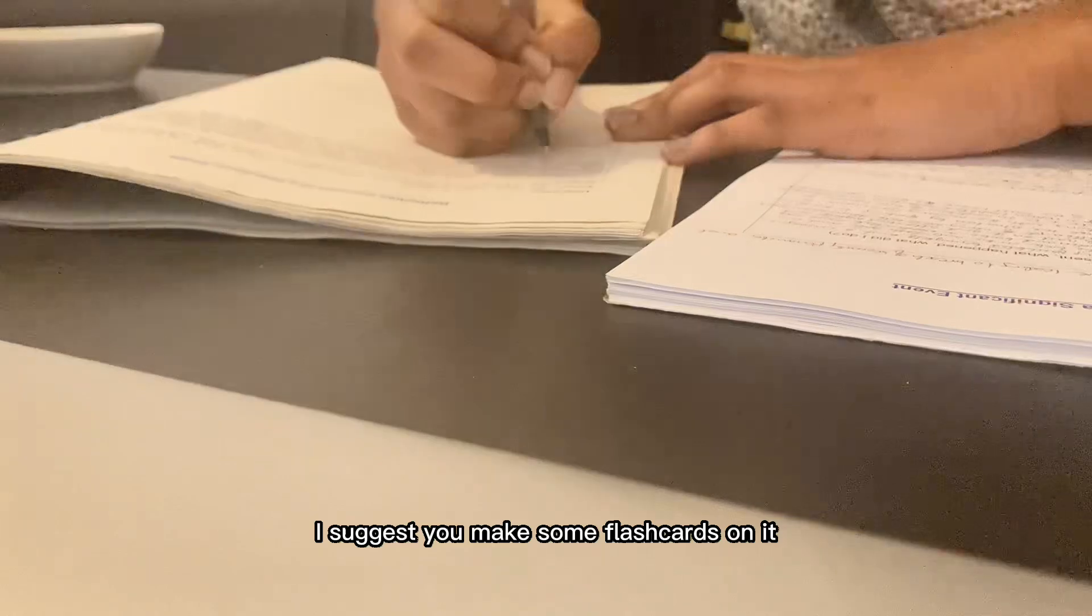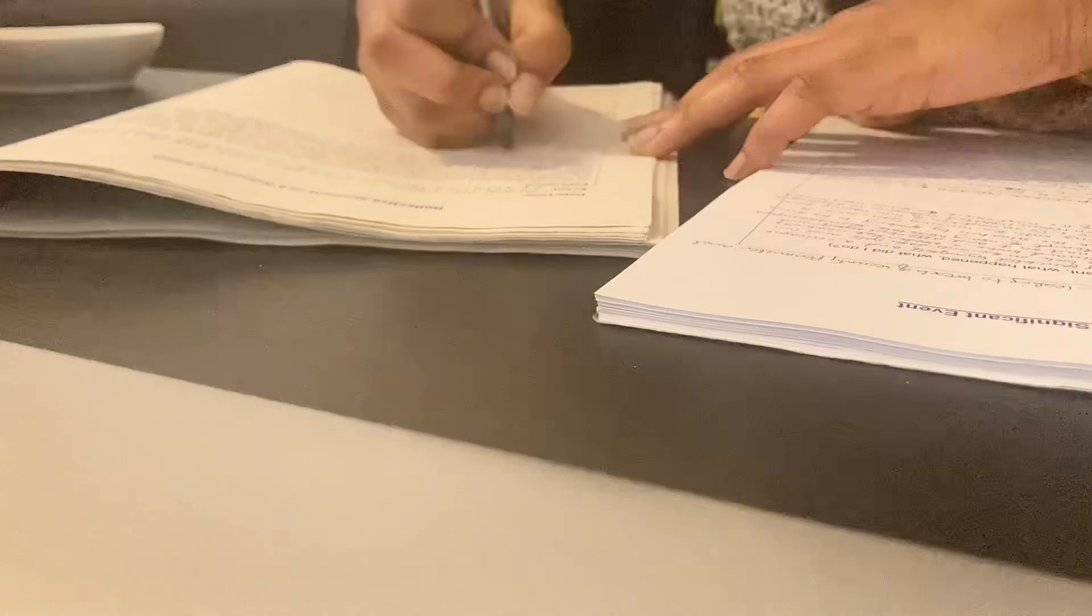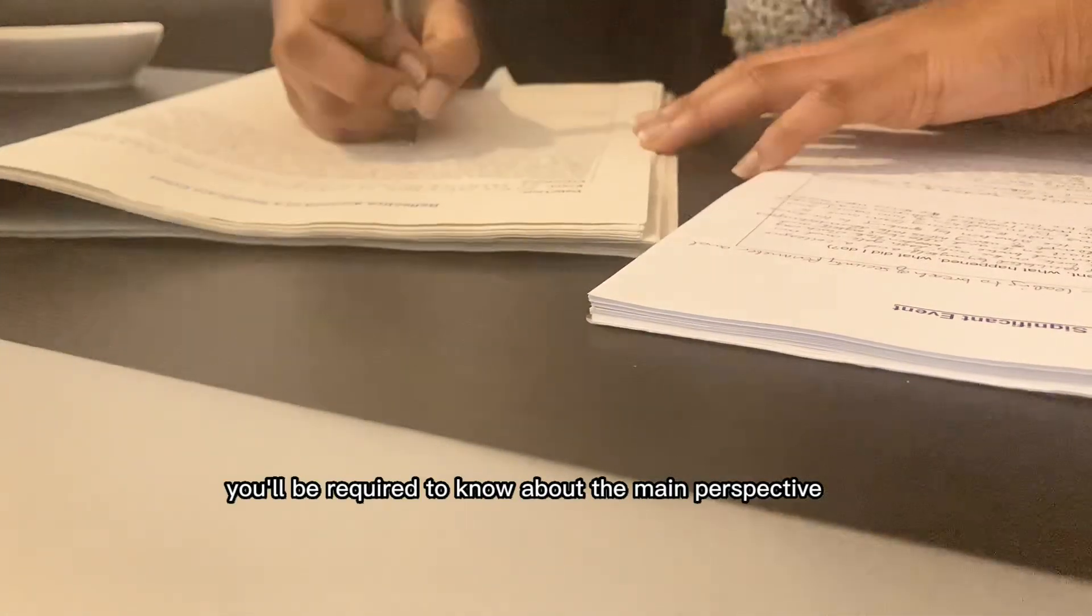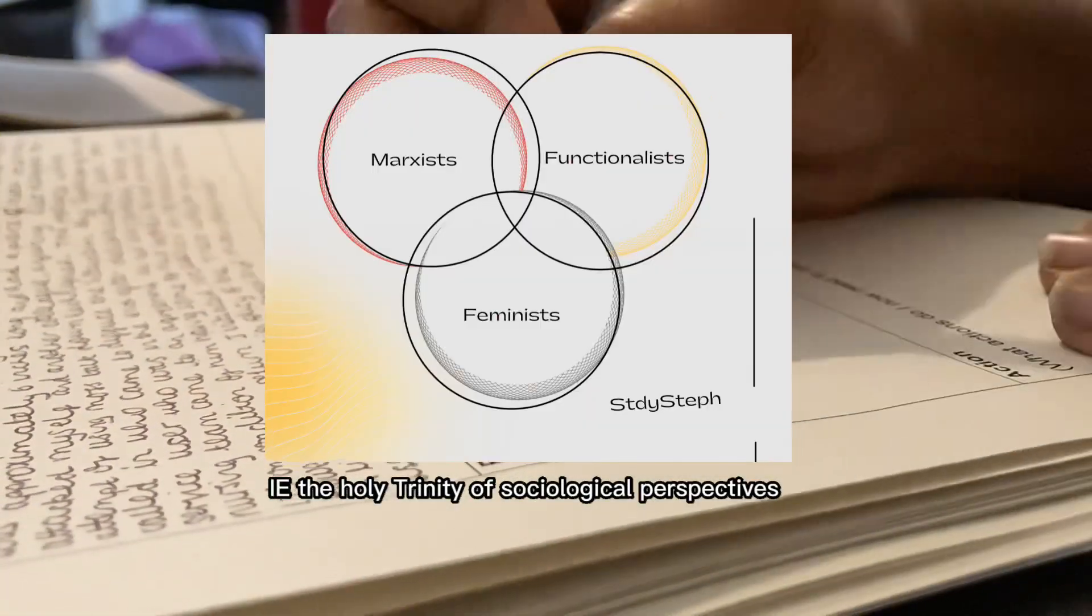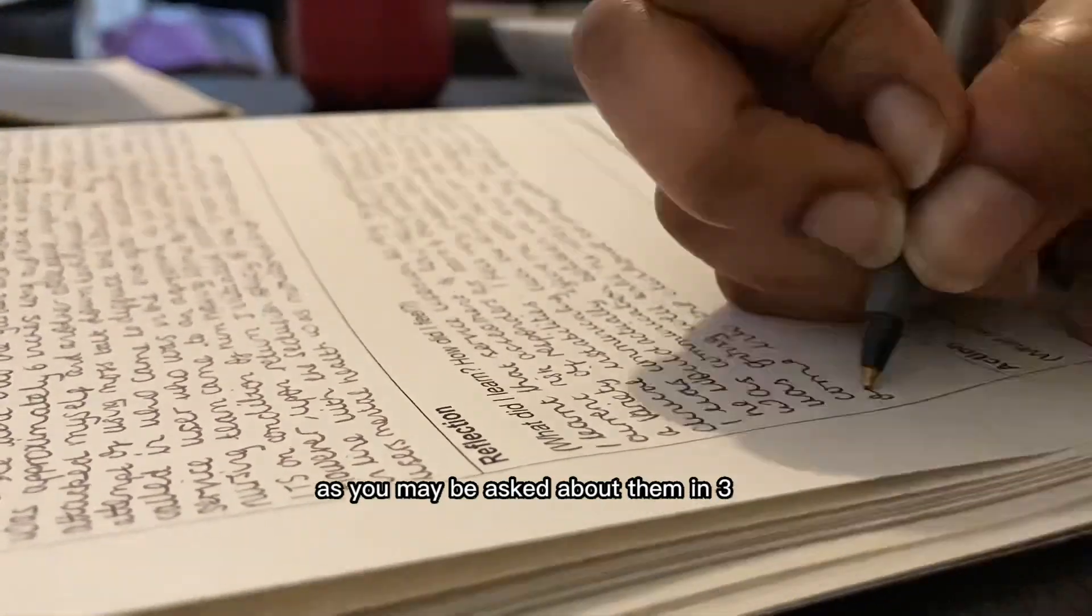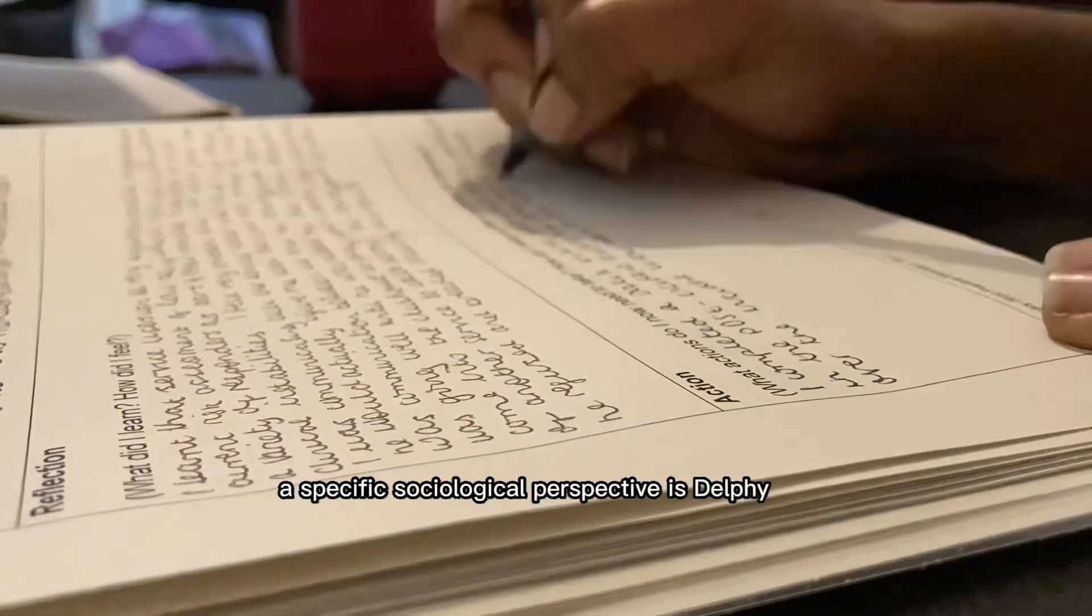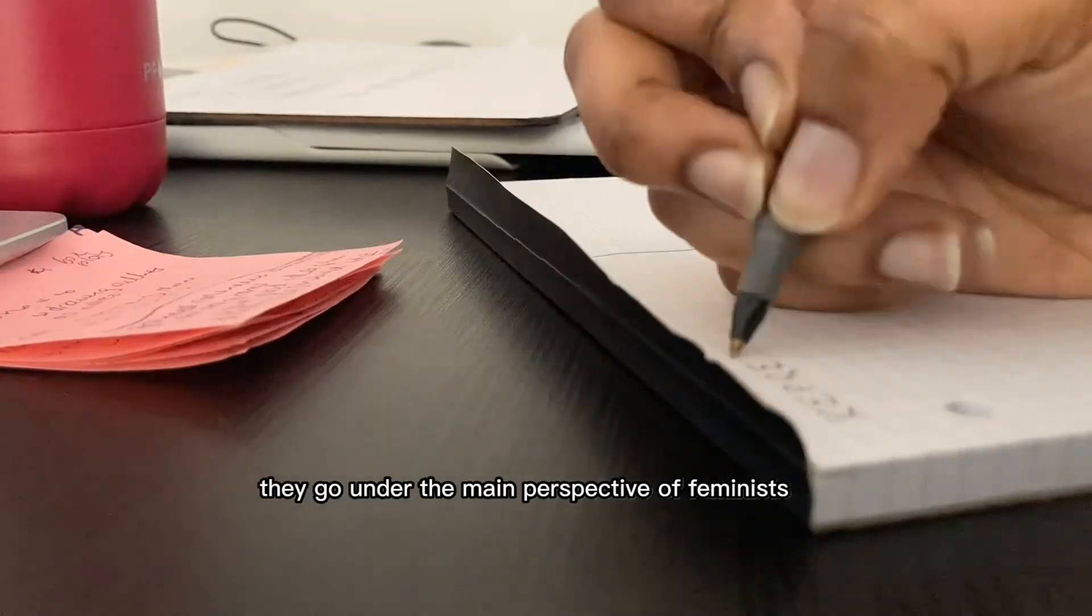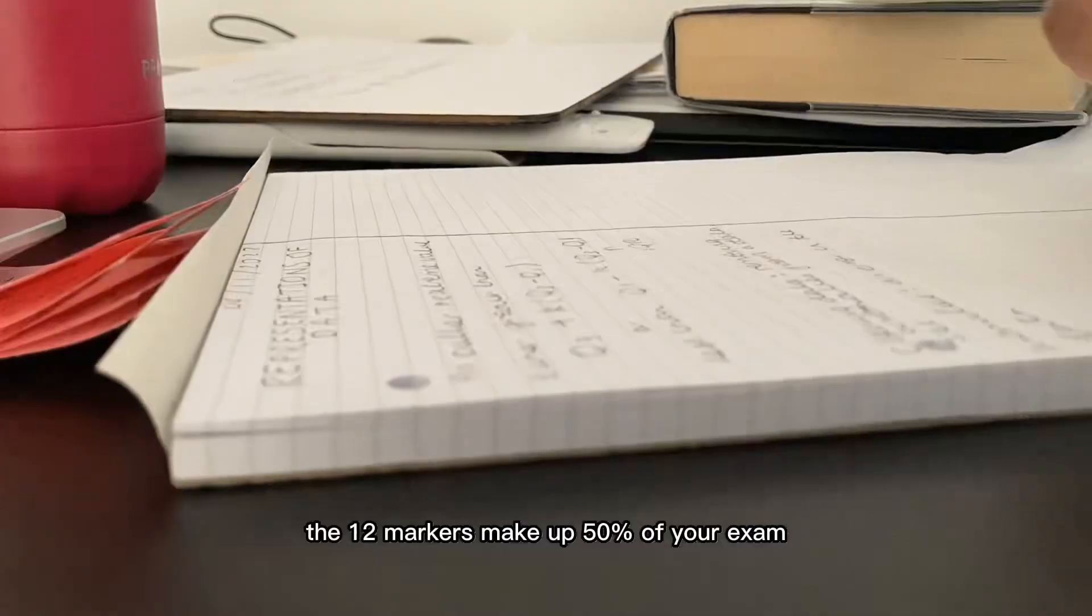I suggest you make some flashcards on it or blurting as many keywords you know about the topic. Key perspectives are also important. You'll be required to know about the main perspectives such as functionalists, Marxists, feminists—the holy trinity of sociological perspectives. You also need to know about specific sociologists as you may be asked about them in 3, 4, or 12 mark questions. For example, a specific sociological perspective is Delphy and Leonard. They go under the main perspective of feminists but they have their specific ideas that contribute towards the family.